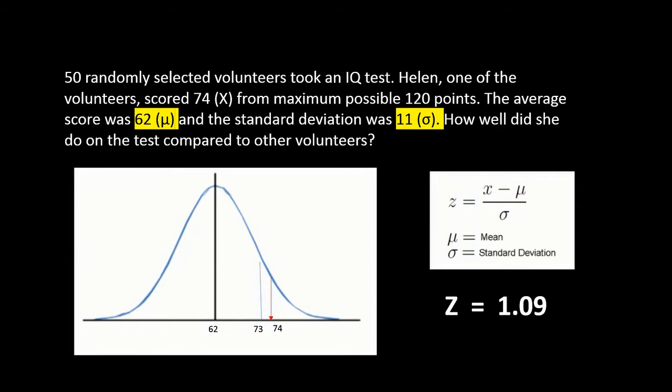50 randomly selected volunteers took an IQ test. Helen, one of the volunteers, scored 74. This is X. From a maximum possible 120 points. The average score is 62. This is Mu. And the standard deviation is 11.